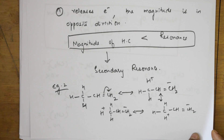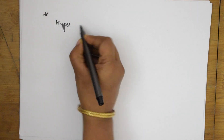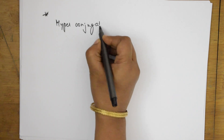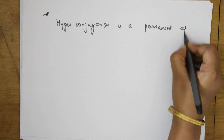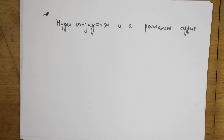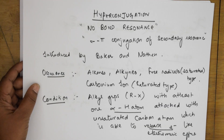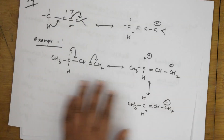One important thing to remember: hyperconjugation is a permanent effect. In my next video I will cover the effects of hyperconjugation. To summarize today: I introduced the concept of hyperconjugation, also called no bond resonance, and showed you how hyperconjugative structures are formed through alpha hydrogen shifts. Thank you for watching.